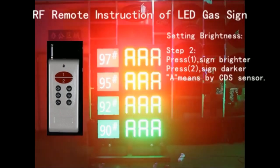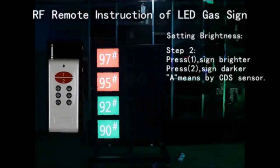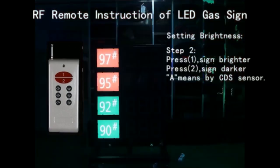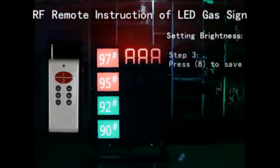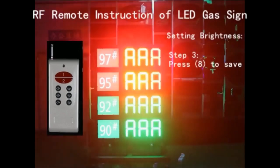Step 6: 'A' means auto-brightness by CDS sensor. Step 3: Press button 8 to save all programming.